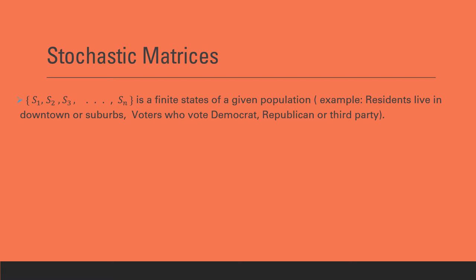For example, we can talk about residents living in downtown or suburbs, voters who would like to vote for Democrat, Republican or third party, soft drink consumers who may buy Coca-Cola, Pepsi-Cola or another brand.